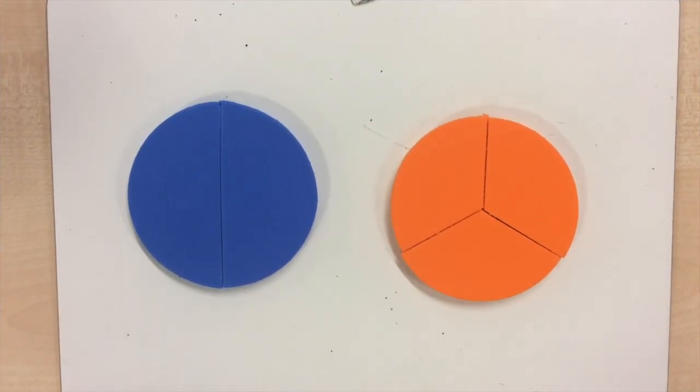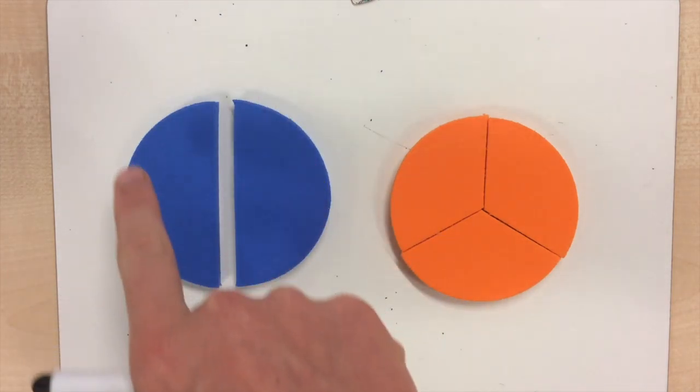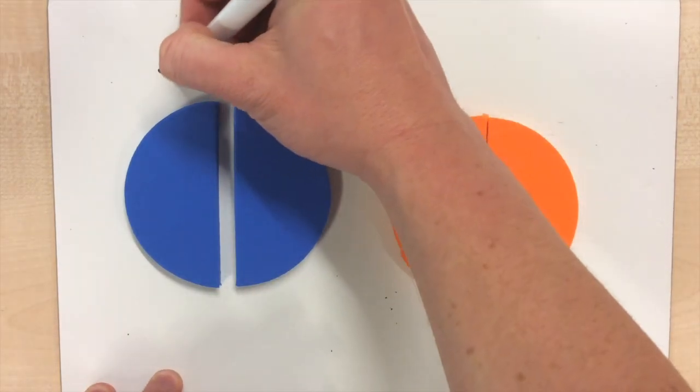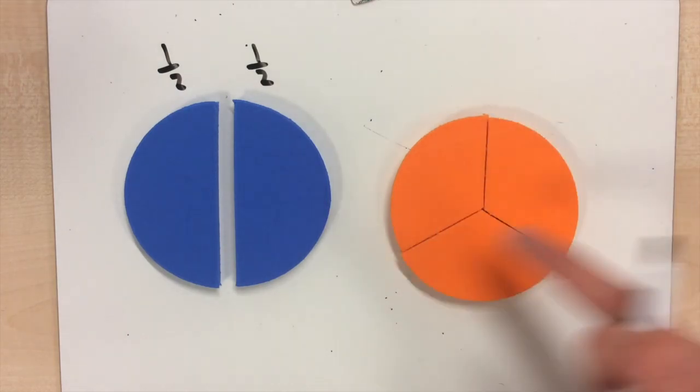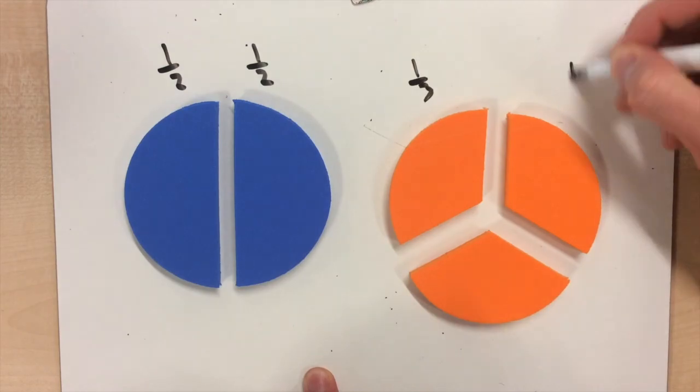A fraction is a part of a whole number. For example, in this blue circle, I've got two parts of this number, so each part of this circle is 1 half. In this orange circle, I've got three parts, so each part is 1 third.